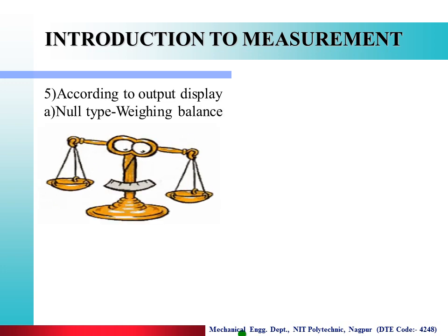Next, according to the output display: the first type is null type, example weighing balance. Suppose I place some fruits on a weighing balance and a standard weight of 1 kg on the other side. Until the pointer comes to the null position, the measurement is not known. When the pointer reaches null position, the measurement is obtained — the weight of the fruit is 1 kg. That is called a null type instrument.